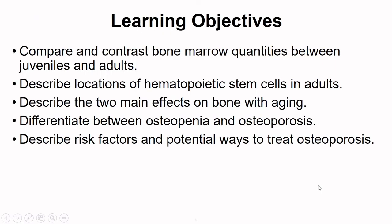After this video I'd like you to be able to compare and contrast bone marrow quantities between juveniles and adults, describe locations of hematopoietic stem cells in adults, describe the two main effects of bone on aging, and differentiate osteopenia and osteoporosis, and talk about different risk factors and potential ways to treat osteoporosis.